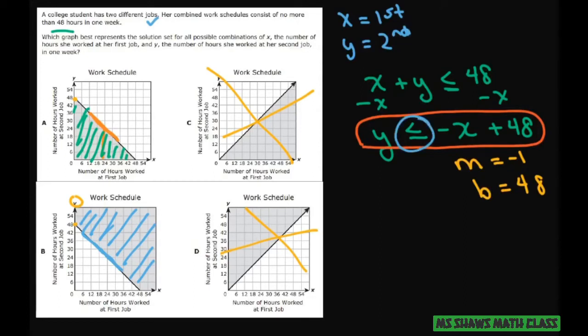But let's also do another way of just picking some points. So if you want to pick some points, you can test the points. We think it's this one. So let's just pick this easy one here. 6, 6. And look at this.